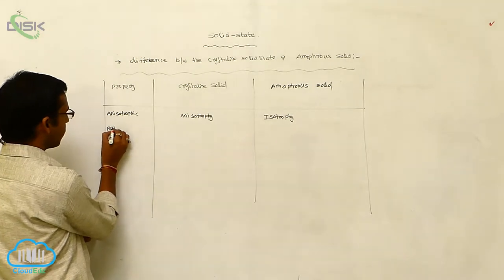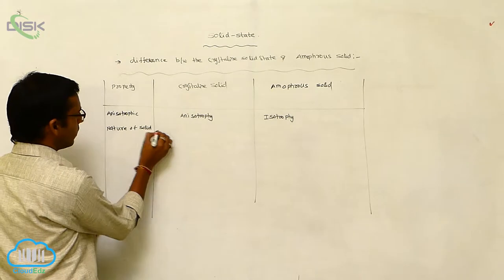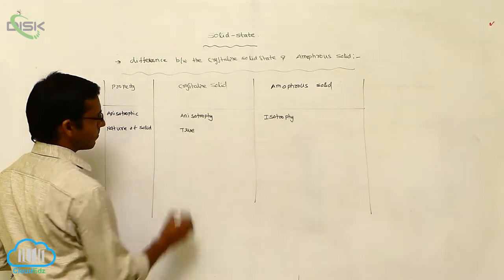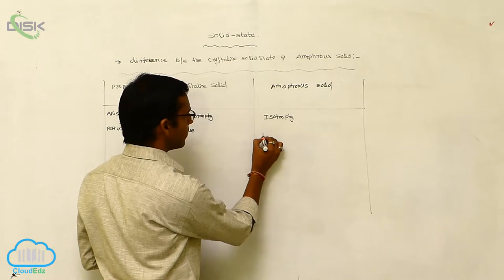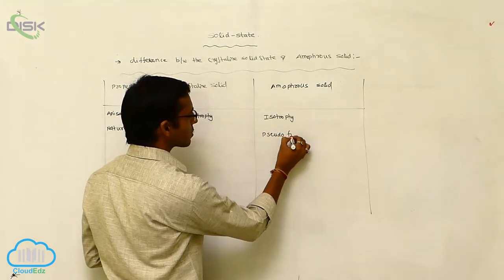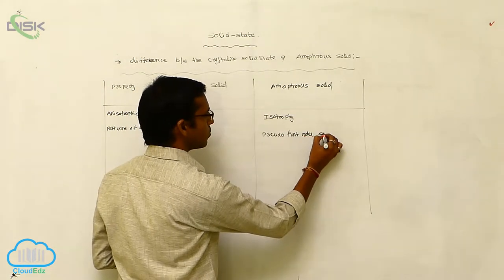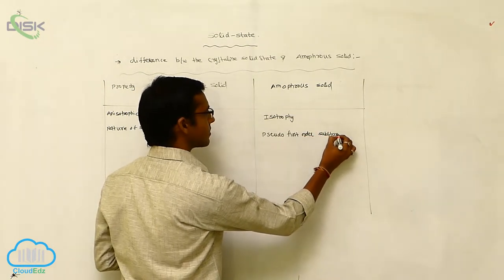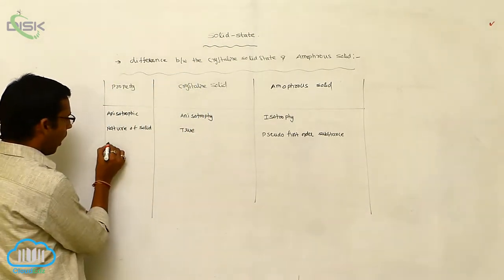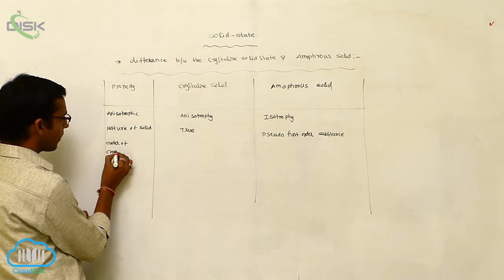The next property is the nature of solid. Crystalline solids are true solids, meaning true substances. Amorphous solids are pseudo-first-order substances.